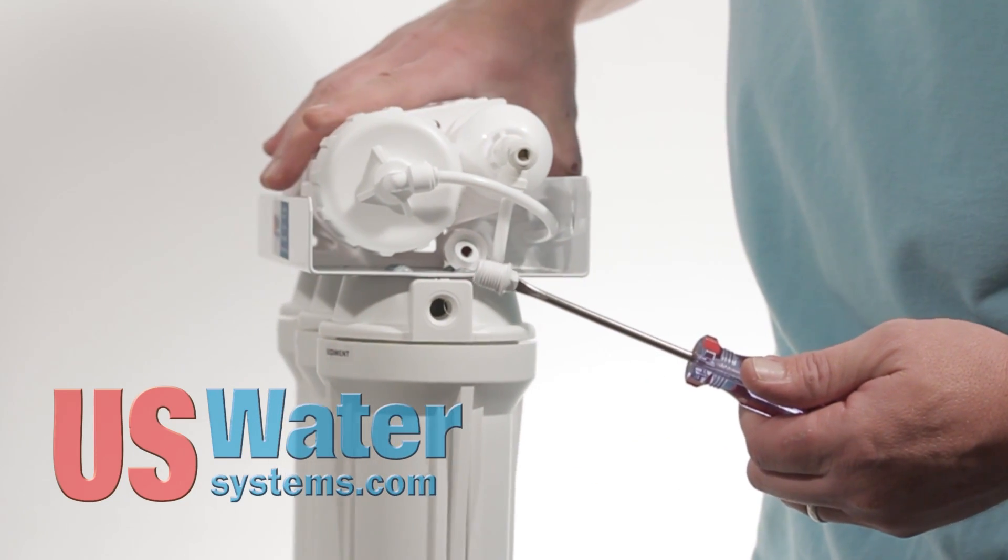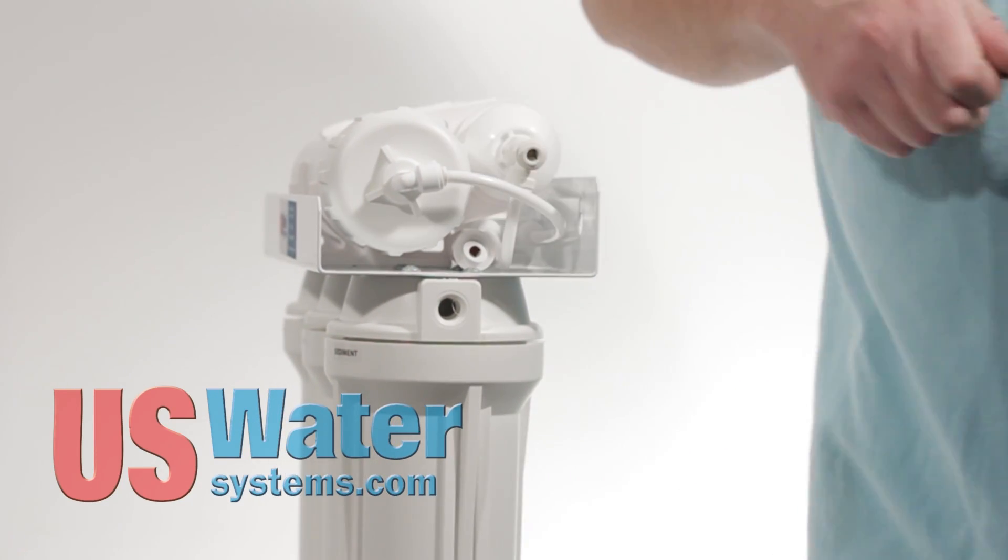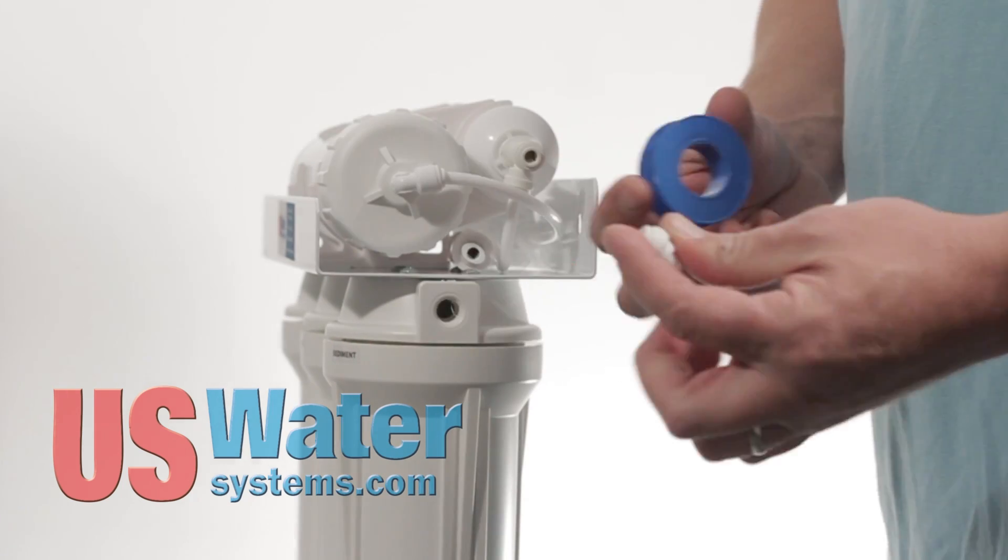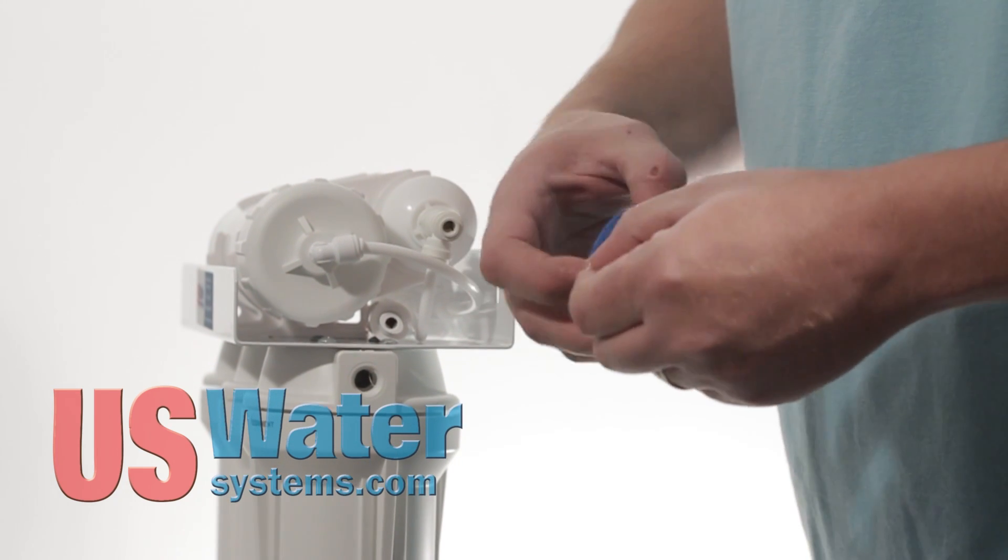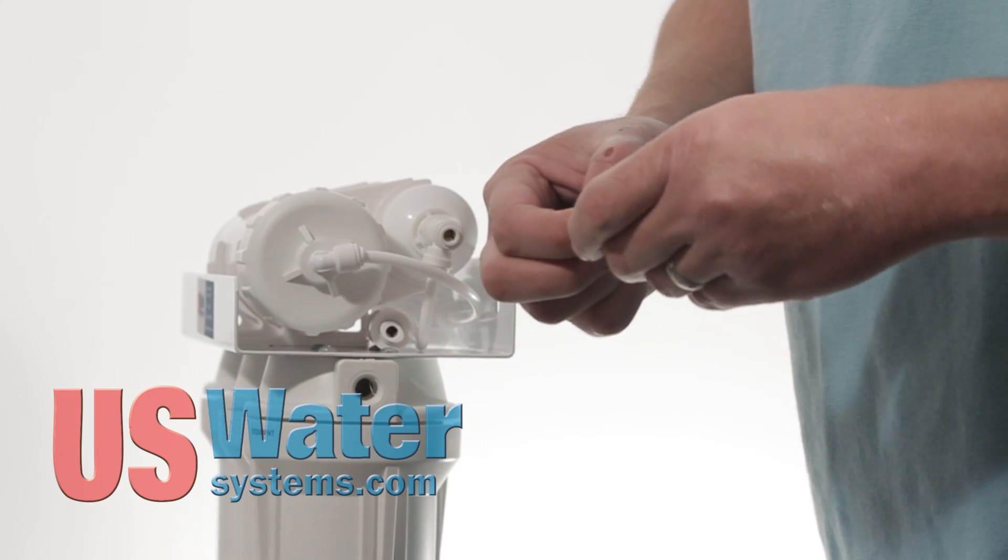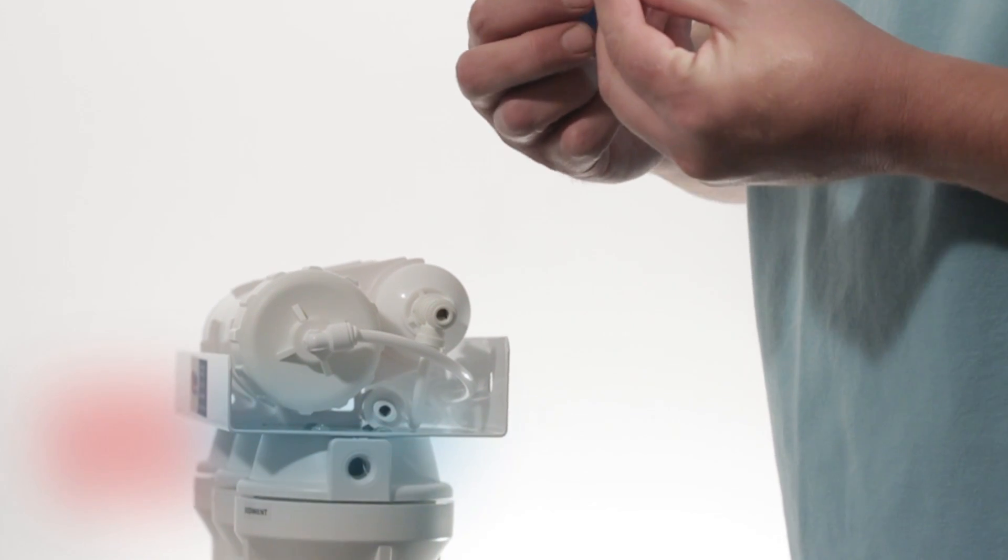Once the old broken fitting is out, then you're going to take your new fitting and wrap your new fitting with Teflon tape to seal it. I'm usually going to wrap it maybe two or three times. Just give it a little bit of sealing.